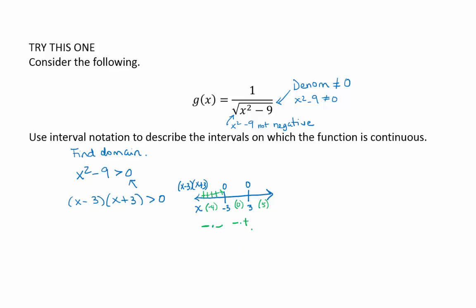If we plug in 5, 5 minus 3 is positive, 5 plus 3 is positive, positive times positive is positive.